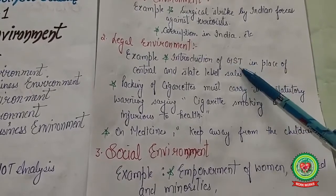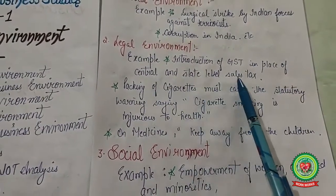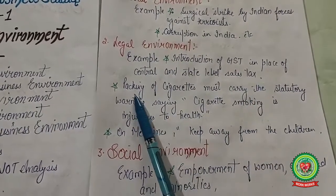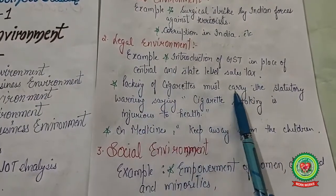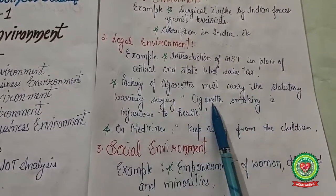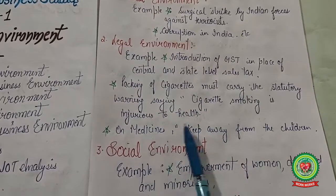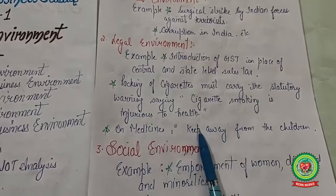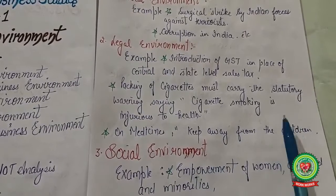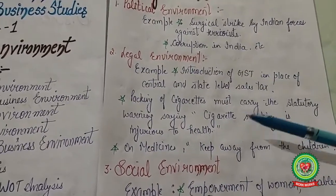Examples of legal environment include the introduction of GST in place of central and state-level sales tax, and statutory warnings on cigarette packaging saying 'cigarette smoking is injurious to health,' as well as warnings on medicines like 'keep away from the reach of children.' These are examples of the legal environment.